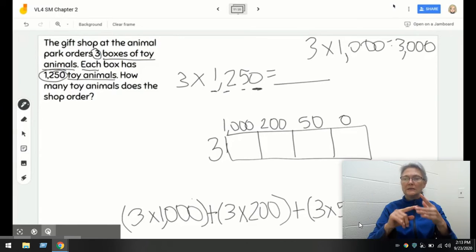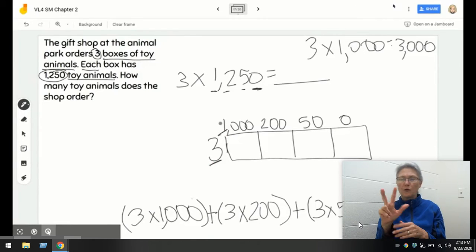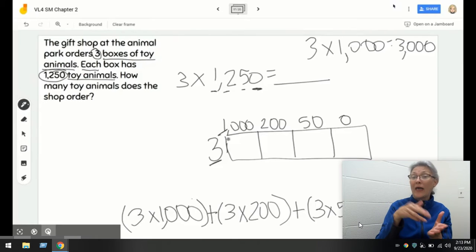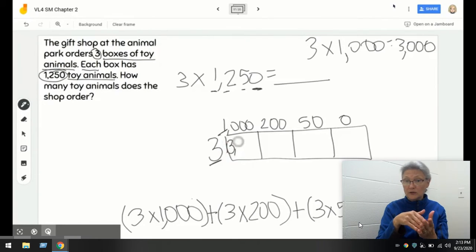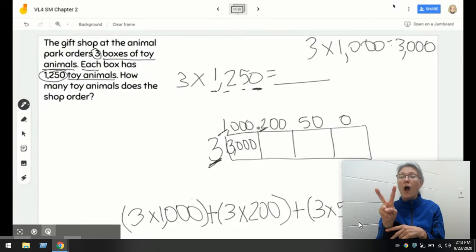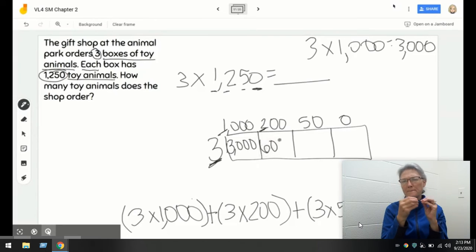Let's go ahead and let's get started. We know 3 times 1 is 3. But that says 1,000. So, 3 times 1,000 is 3,000. Then 3 times 2 hundredths would be 6 hundredths. If I write that down as a number, I'm going to go ahead and write it down as 600.